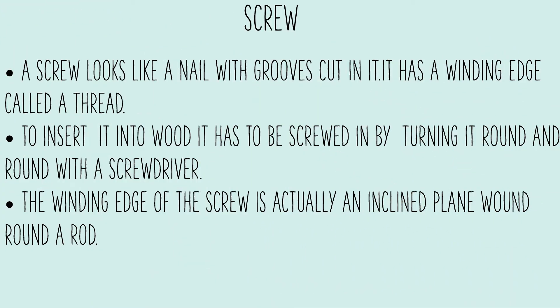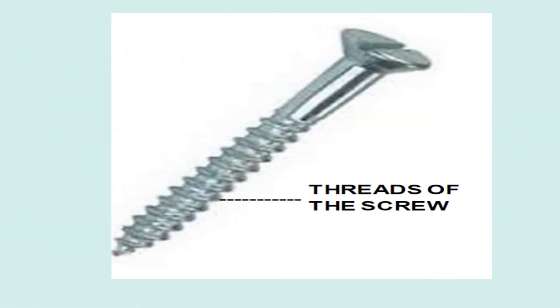Screw. A screw looks like a nail with grooves cut in it. It has a winding edge called a thread. To insert it into wood, it has to be screwed in by turning it round and round with a screwdriver. The winding edge of the screw is actually an inclined plane bound round a rod.